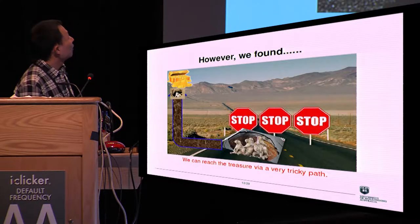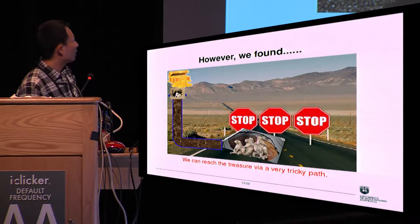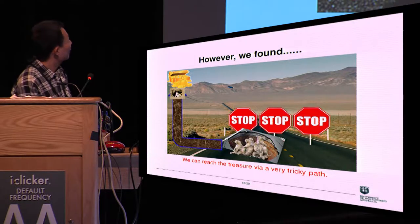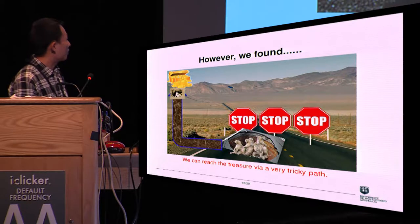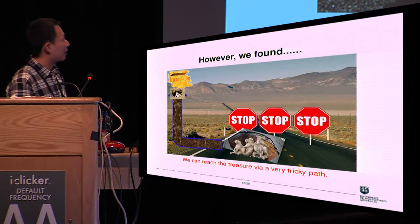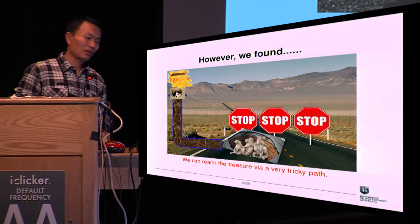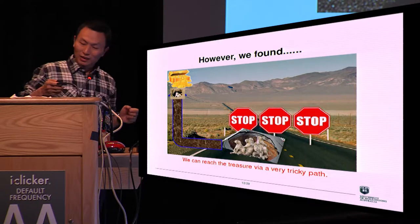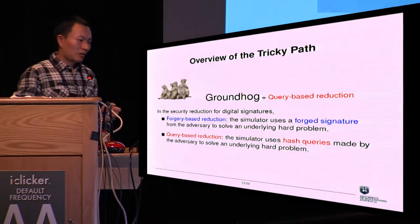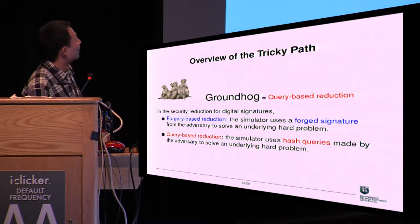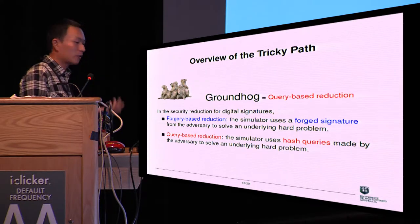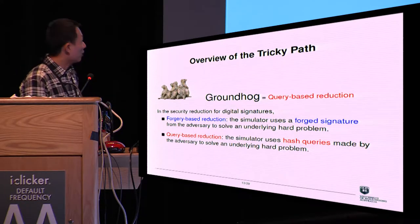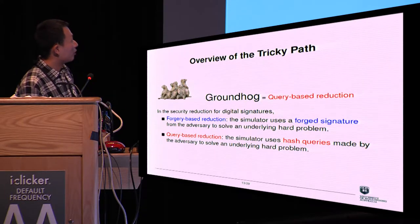However, we found we can bypass this stop sign and reach the treasure by a very tricky path with the help of Groundhog. Groundhog is a new security reduction for digital signatures. We call it query-based reduction.